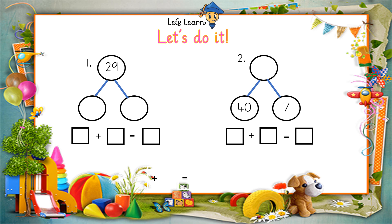Now let's do two examples together. Then you can check out an online worksheet attached in the description — that will help you practice these sums. First, do it with me. The number given is 29. What will go in 1s? 9 — that's correct. And in 10s? It will be 2, and along with 2 it will be 0. So 20 and 9 will be 29. Let's write the sum: 20 plus 9 equals 29.